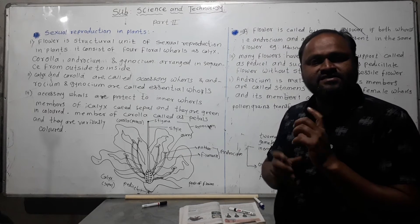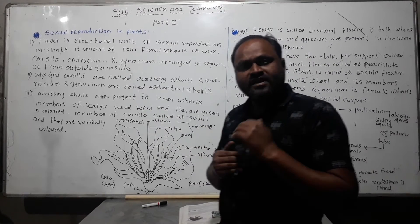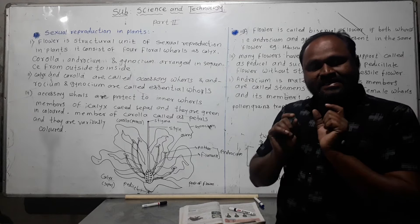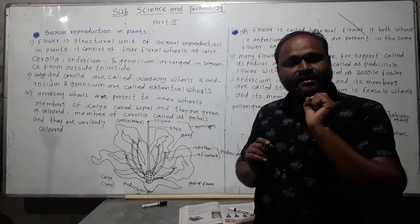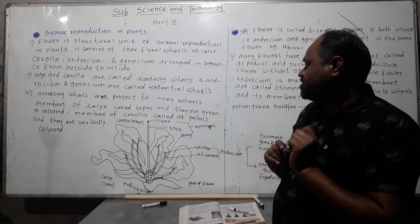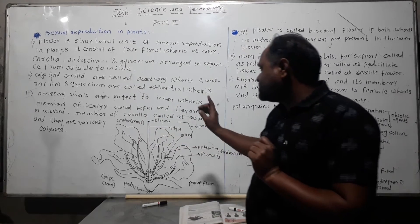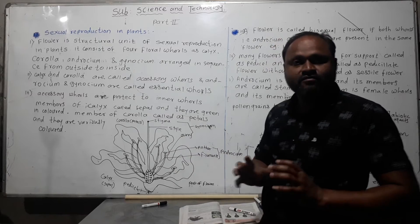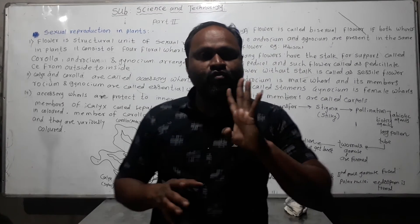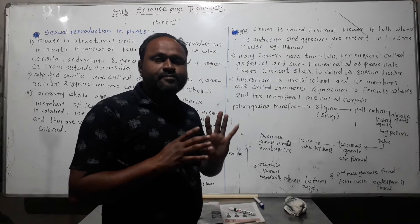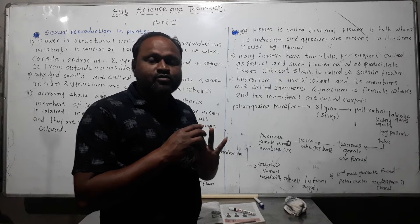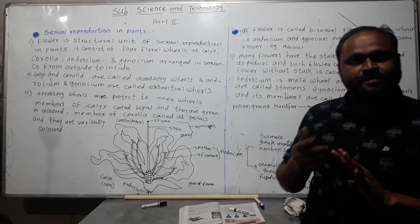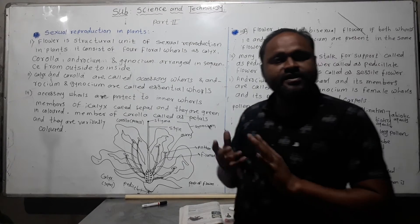Members of calyx are called sepals, and members of corolla are called petals. Sepals are green in color, while petals are colorful and come in various colors in nature. Calyx and corolla are the outer accessory whorls that protect the inner essential whorls, androecium and gynoecium.